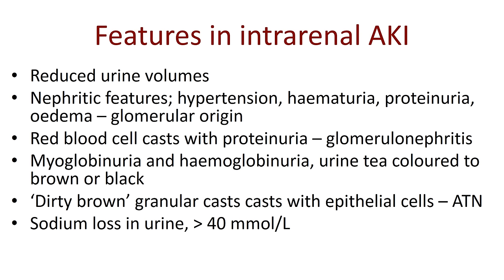Red blood cells that get through into the tubules tend to clump together inside the tubule, taking up its shape. When passed out, they retain that tubular shape — we call these casts. Red blood cell casts in the urine together with proteinuria indicate glomerular nephritis as a likely diagnosis.